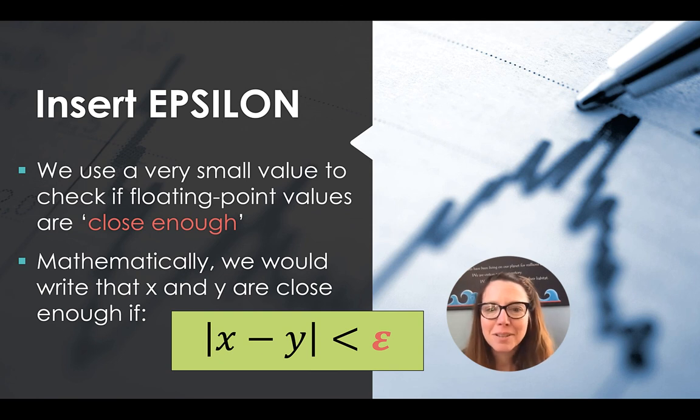And this is when we insert something called epsilon. We really want to use some small value, and it's defined differently depending on what we're doing, to check if floating point values are close enough. Mathematically, we check that two numbers are close enough if we say the absolute value of that difference, x minus y, so we don't care if it's plus or minus, x minus y is less than some very small number epsilon.